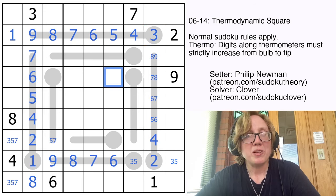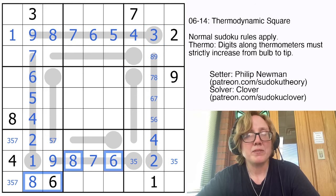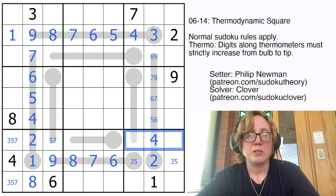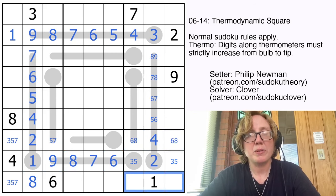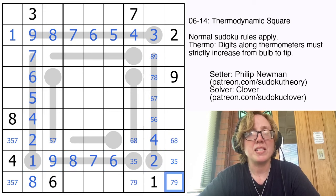Now what? We have 6 and 8 in both of these rows, which means the only places we can put a 6 or 8 in region 9 are there and there. And now we know these are going to be 7 and 9. So that will be a 7 and that will be a 9.